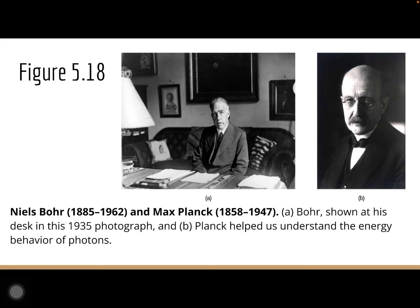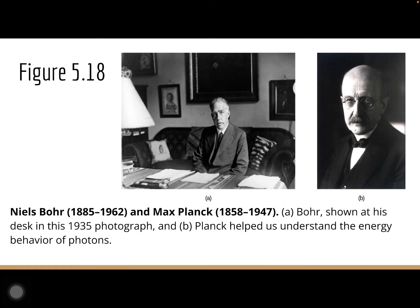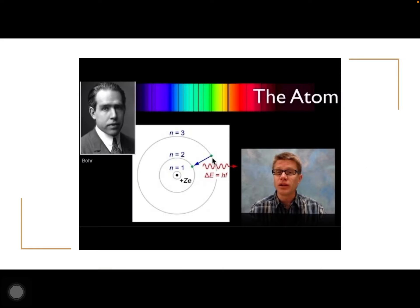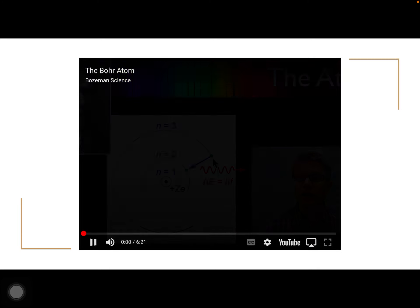We also talk about Niels Bohr and Max Planck. Bohr came up with the Bohr model, which has protons and neutrons in the middle with electrons orbiting in defined orbitals. Planck discussed how energy and photons behave within those energy levels. This next video does a really nice job explaining the Bohr atom and Planck's contribution — how electrons jump energy levels based on how much energy they have, and what happens when they drop back down.